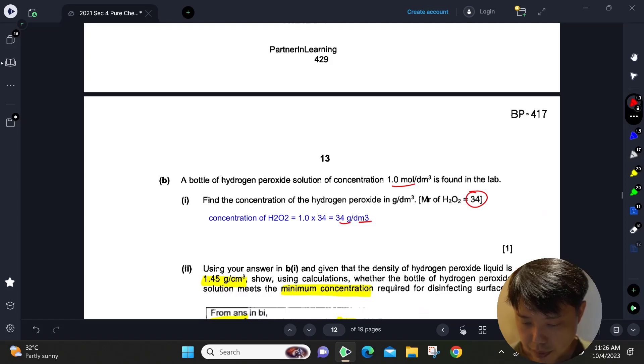Part B: find the concentration of hydrogen peroxide in grams per dm³. We are told that the concentration is 1 mole per dm³. We know the Mr, so we just need to multiply the concentration in moles per dm³ by Mr to get the concentration in grams per dm³.